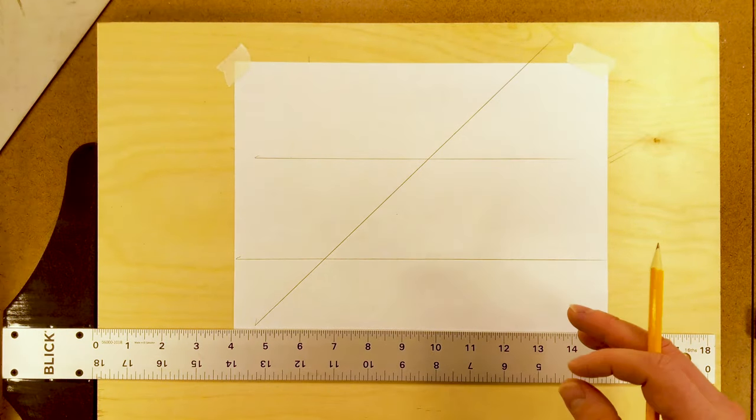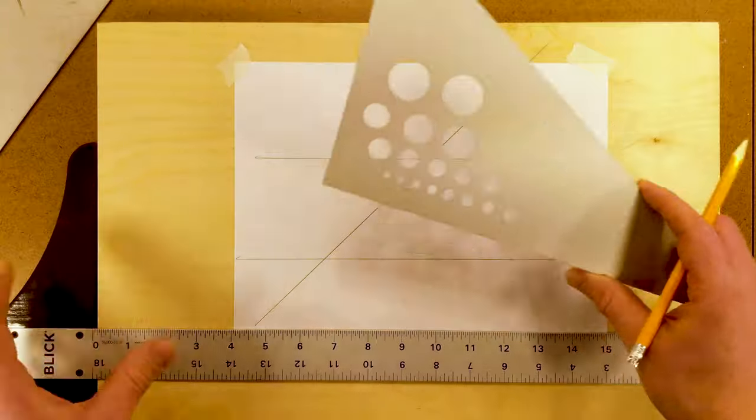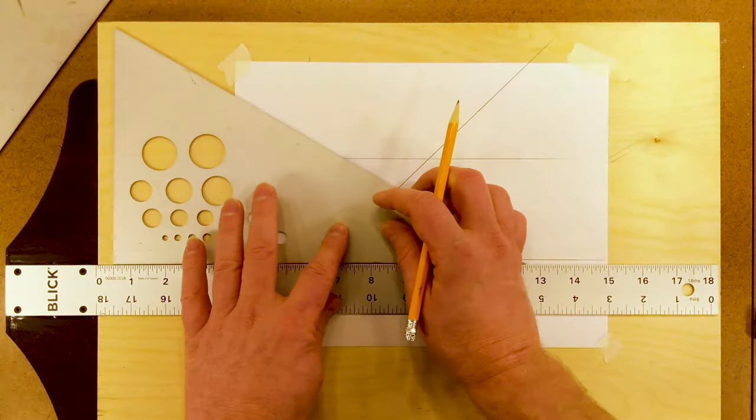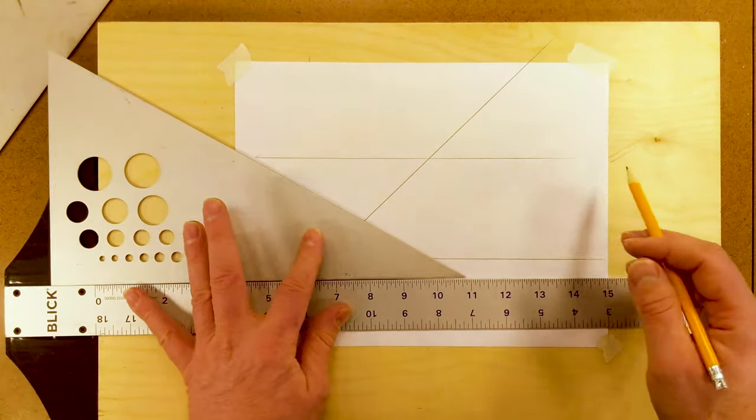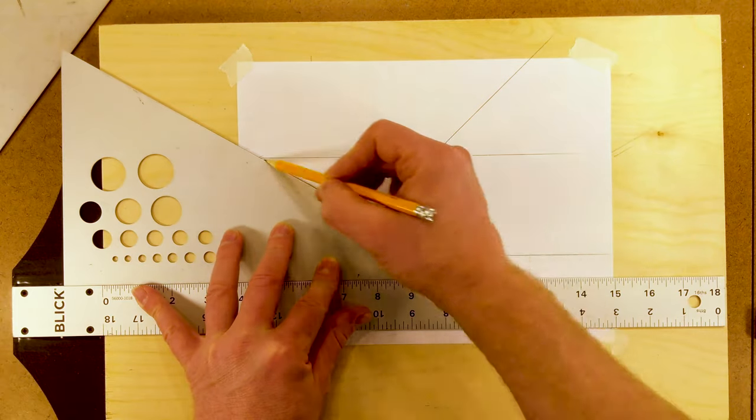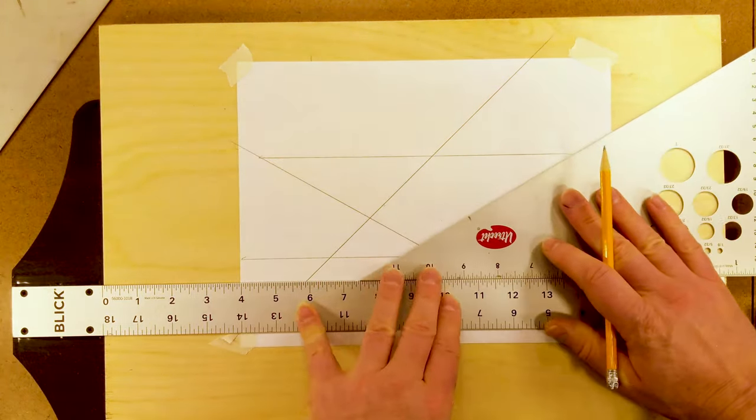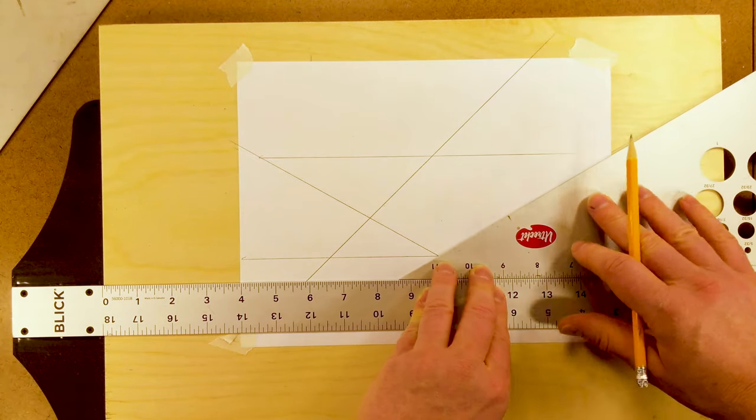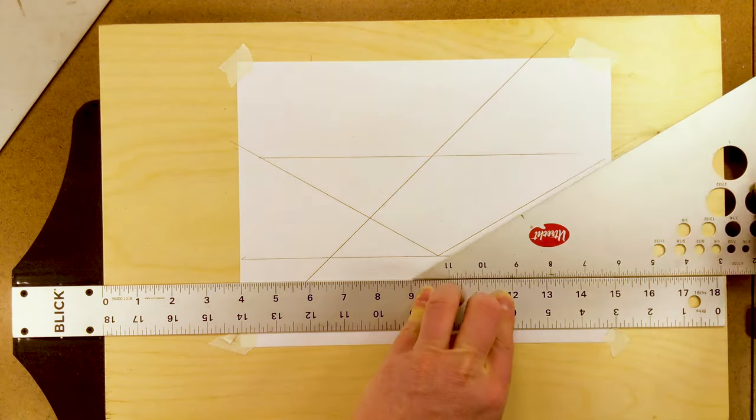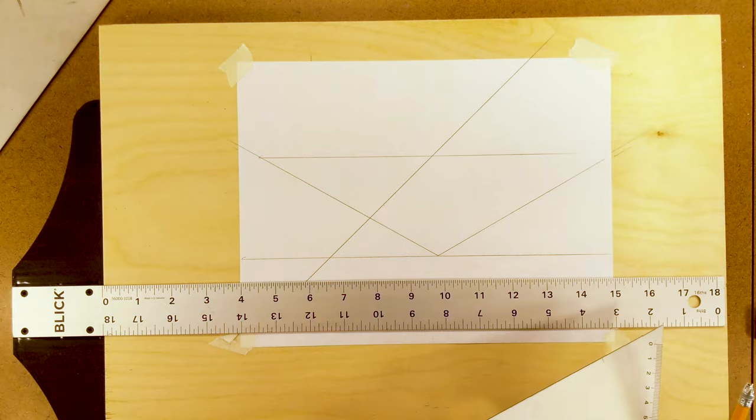The other triangle that we need is a 30-60 triangle. This triangle is used for making isometric drawings. So you can start along your horizontal and you're going to get that nice 30 degrees. Then you can flip it over and draw the other way. Now you're ready to make your isometric projection.